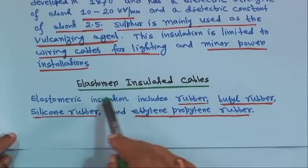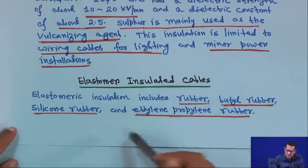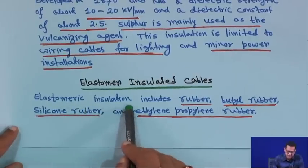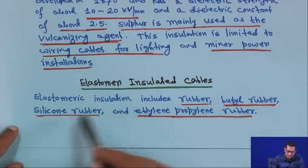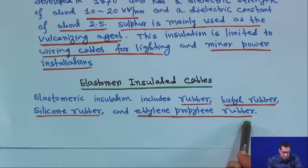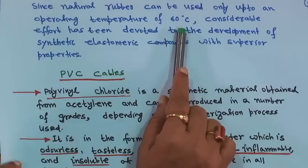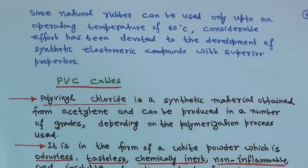Elastomeric insulation includes rubber, butyl rubber, silicon rubber, and ethylene propylene rubber. Since natural rubber can be used only up to an operating temperature of 60°C, considerable effort had been devoted to the development of synthetic elastomeric compounds with superior properties so that operating temperature can be increased.